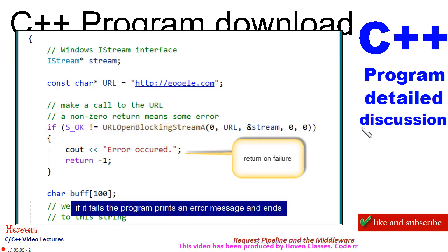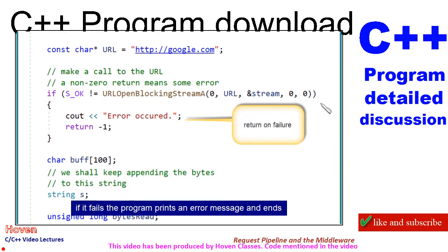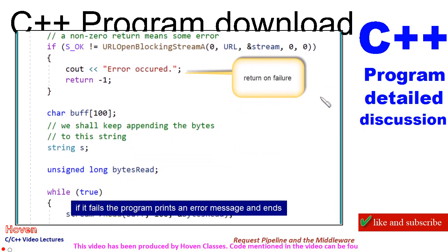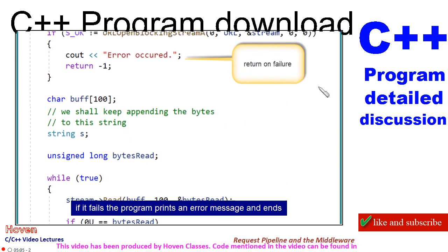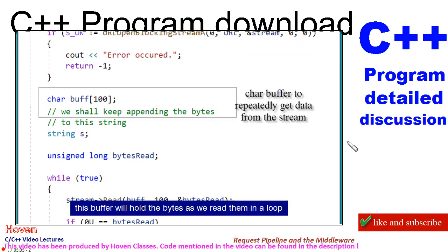URLOpenBlockingStream returns S_OK on success. If it fails, the program prints an error message and ends. A buffer is declared to hold the bytes as we read them in a loop.